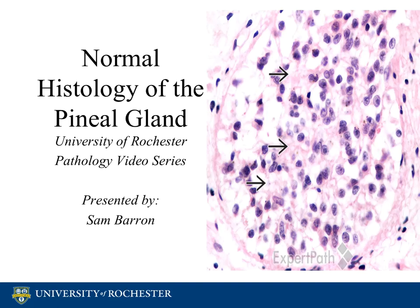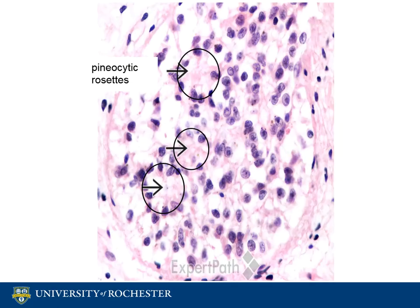Histologically, the pineal gland is similar to nervous tissue. There are two types of cells that make up the pineal gland. The first are pinealocytes. They are typically dark, round, and large in shape and make up about 95% of the pineal gland.